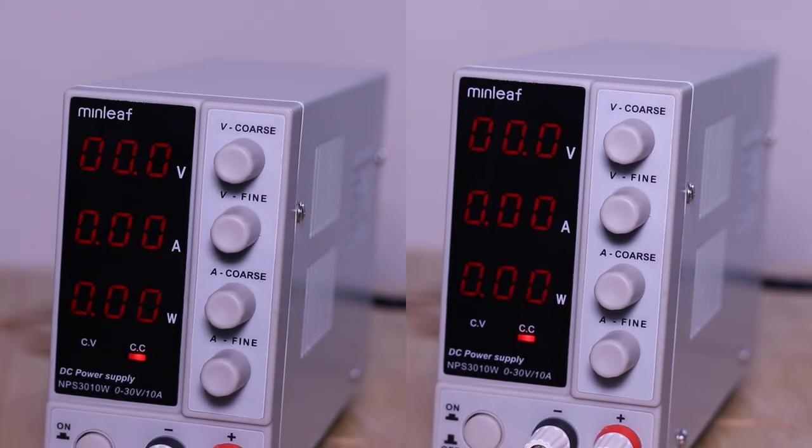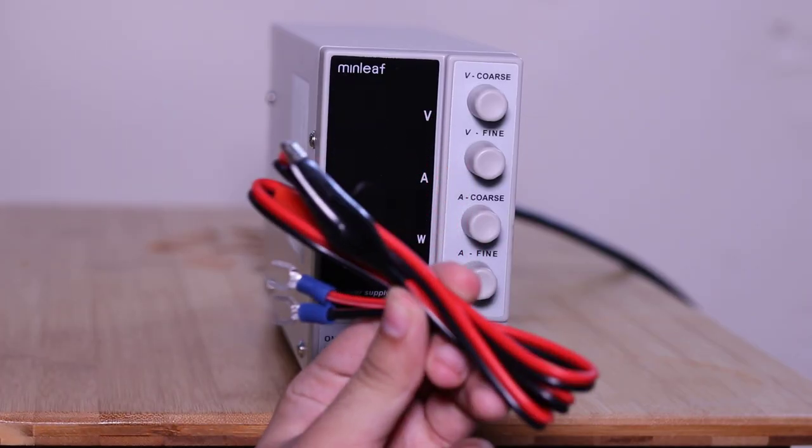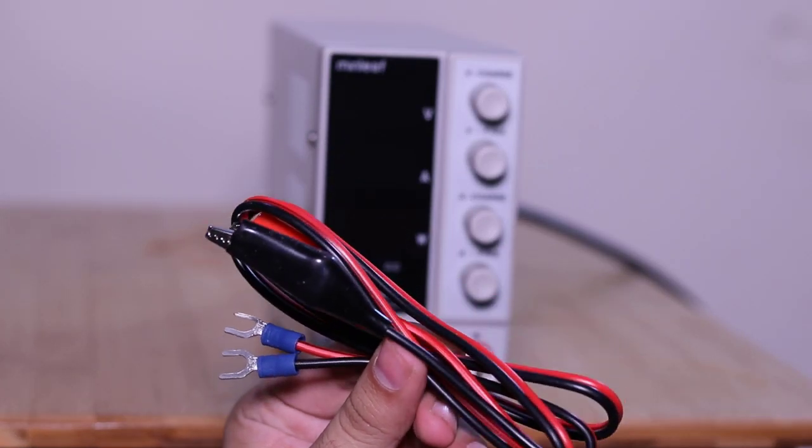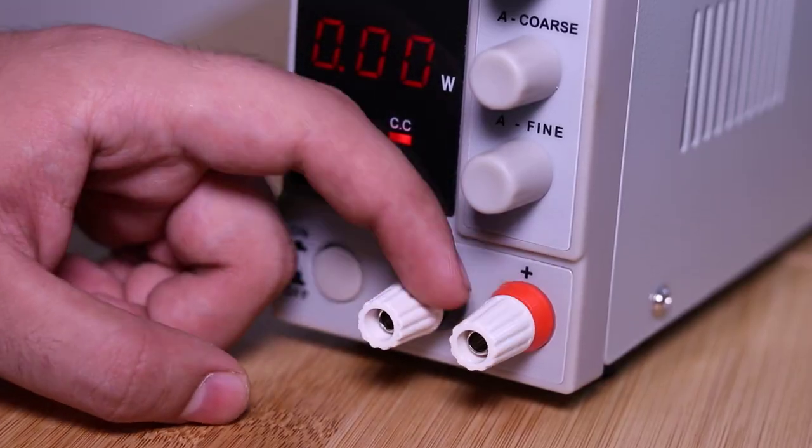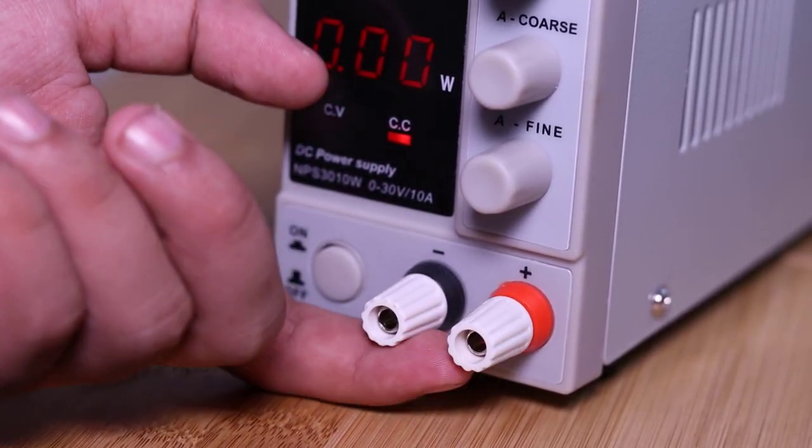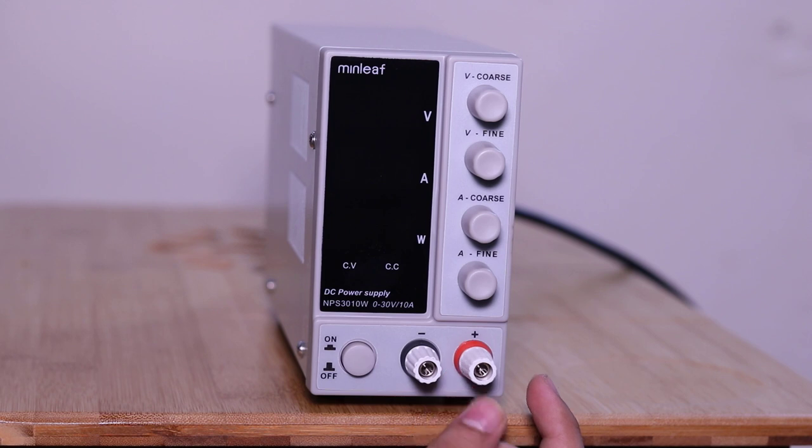Switch and output connectors. Now I am connecting the DC output cord. You can easily connect the both negative and positive wires by using these plastic screws.